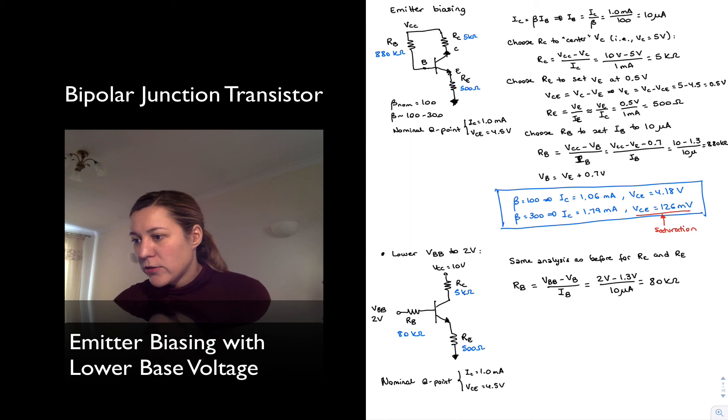When you look at the results for this, for a lower Vb, this is what we got. So beta equals 100 yielded IC equals 1.06 milliamps, Vce equals 4.16 volts. So virtually no change with respect to the previous example.